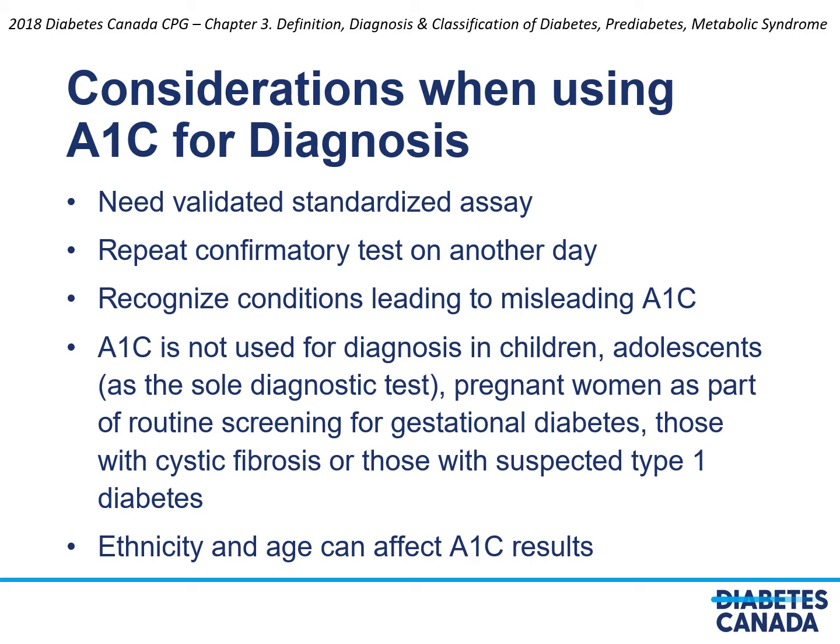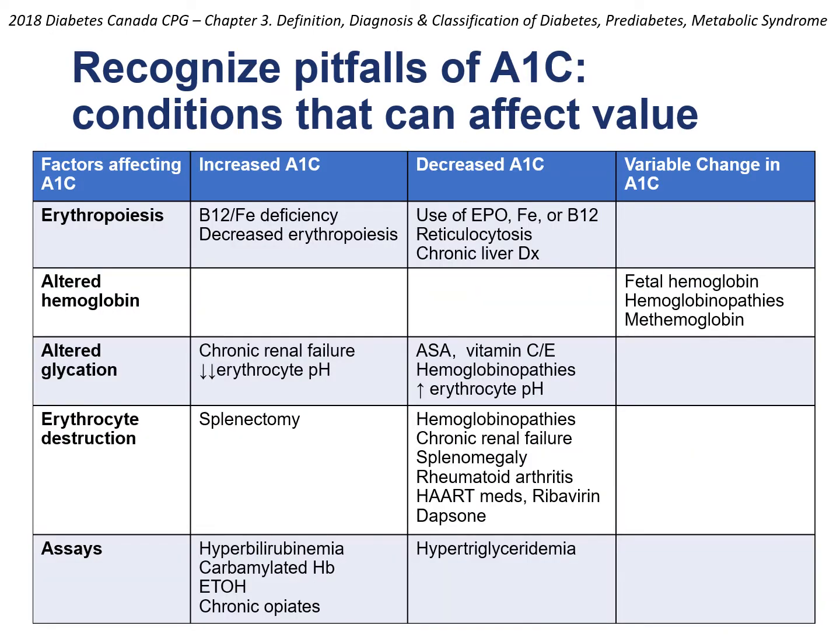It has been demonstrated that ethnicity and age can affect hemoglobin A1c results and the relationship between A1c and diabetes complications, but we do not yet have sufficient evidence to propose different cutoffs for these different groups. Hemoglobin A1c is used as a diagnostic test for diabetes because it strongly correlates with glucose levels. However, there are some health conditions and medications which can significantly alter that correlation and make hemoglobin A1c an invalid test for diabetes. These include conditions that affect rates of erythropoiesis, alter the hemoglobin molecule, alter the glycation of hemoglobin, increase the rates of erythrocyte destruction, or directly interfere with the assay for glycated hemoglobin.